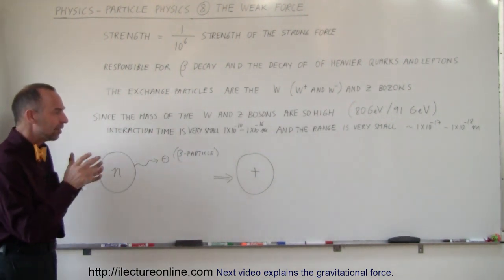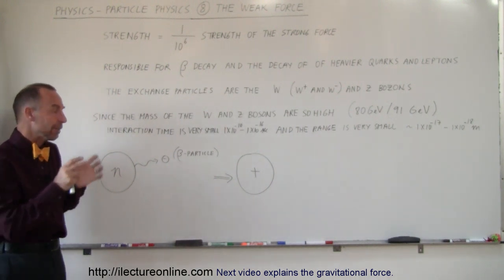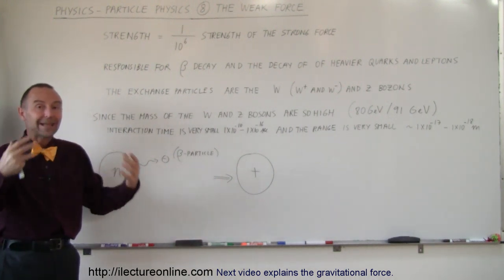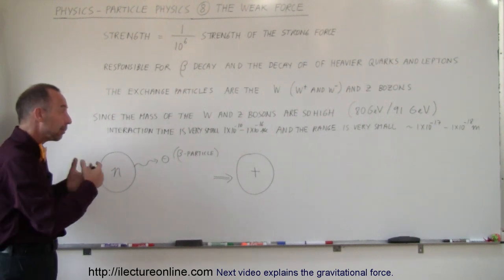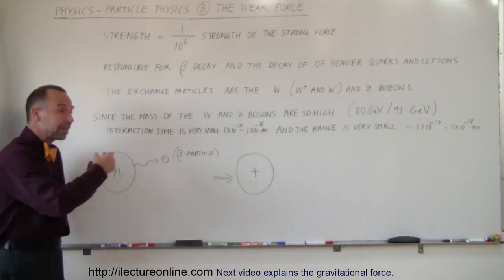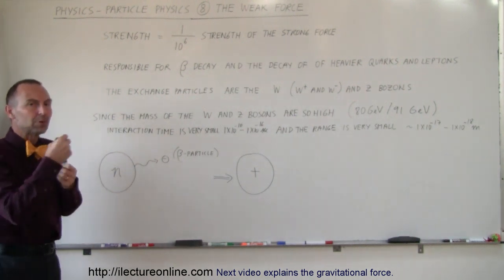So by doing that, since the makeup of a neutron and the makeup of a proton is determined by the types of quarks that are in there, that must mean that when it ejects an electron, it must change one quark into a different quark.